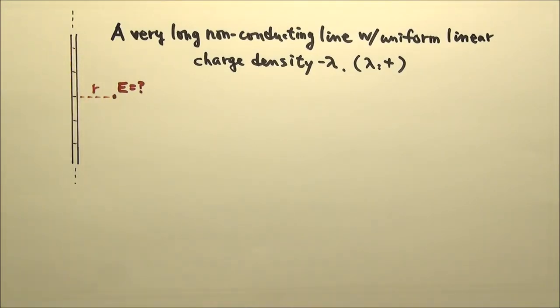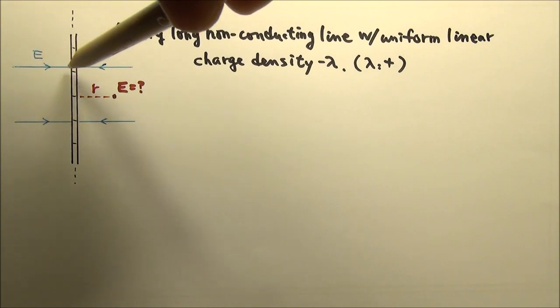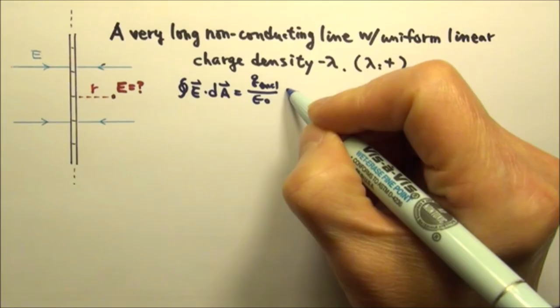A very long line of charge has cylindrical symmetry, and its electric field lines are all perpendicular to the line of charge. So Gauss's law is much more convenient than Coulomb's law for this scenario.